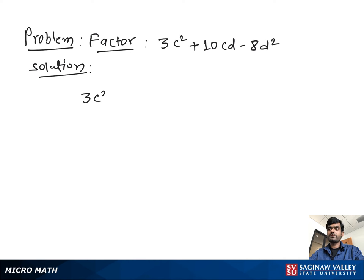Factor 3C² + 10CD - 8D². What to do first: we multiply the coefficient of C² with the coefficient of 8D². That is 3 times negative 8, which is negative 24. These are the factors of negative 24. From these factors, we find